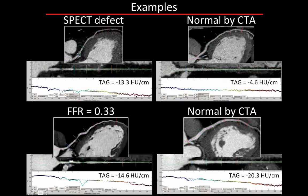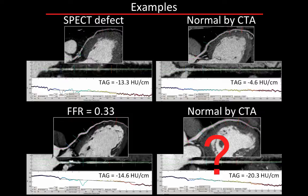Here's another example: a lesion with a fractional flow reserve of 0.33—very significant—and a similarly large TAG of minus 14.6 Hounsfield units per centimeter. But on the right, there is another case that is normal by CTA and has a TAG that is much larger: minus 20.3 Hounsfield units per centimeter. So one might ask why this is happening, and secondly, how are we going to deal with it?